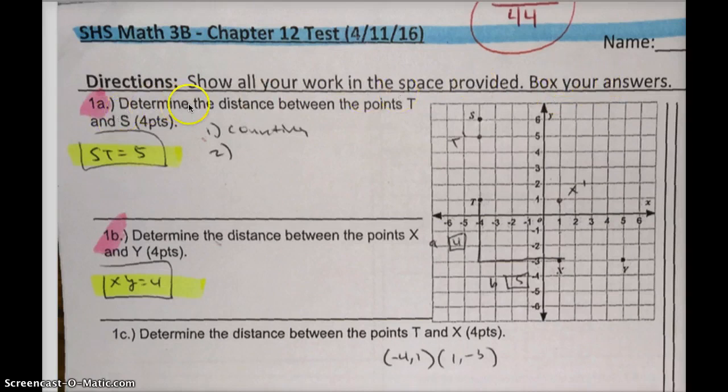Number 1a, determine the distance between the points T and S. If you go here on your coordinate graph, you can see S and you can see T. You recognize that it is a vertical, so you don't have to use the distance formula or the Pythagorean theorem. All you have to do is count: 1, 2, 3, 4, 5. Each of these are one unit, so the answer is 5.